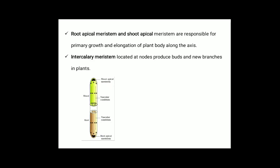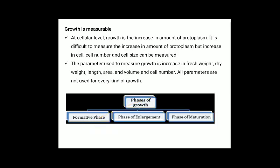Growth is measurable at the cellular level. Growth is the increase in amount of protoplasm; it is difficult to measure directly, so increase in cell number and cell size are measured instead. The parameters used to measure growth include increase in fresh weight, dry weight, length, area, volume, and cell number. Not all parameters are used for every kind of growth.